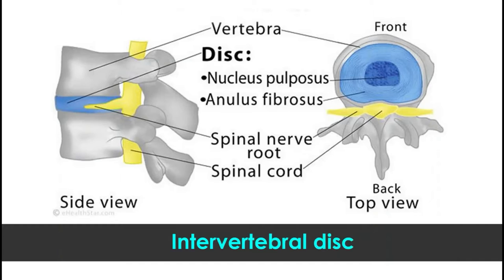This disc acts as a cushion, and this cushioning is very important. If our vertebral column were made up of a single bone, you would be very stiff and you couldn't bend forward or back.